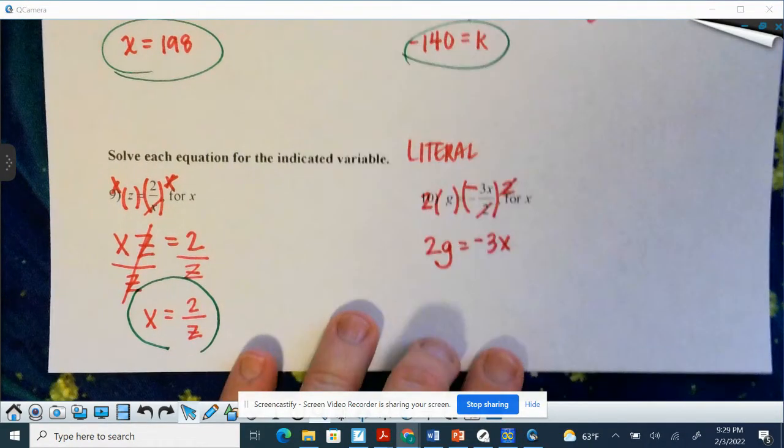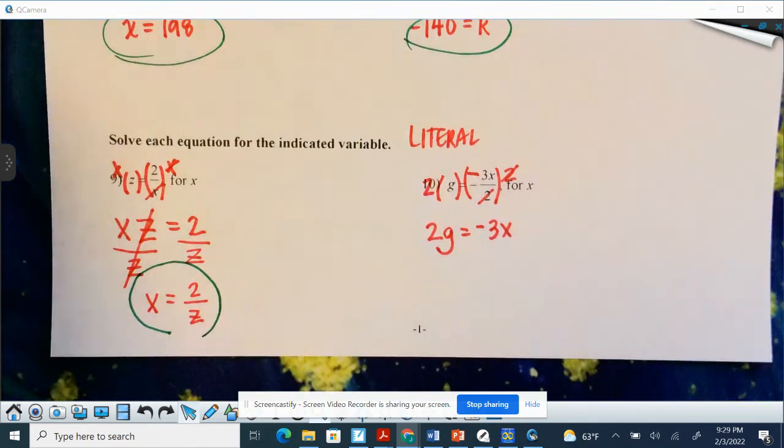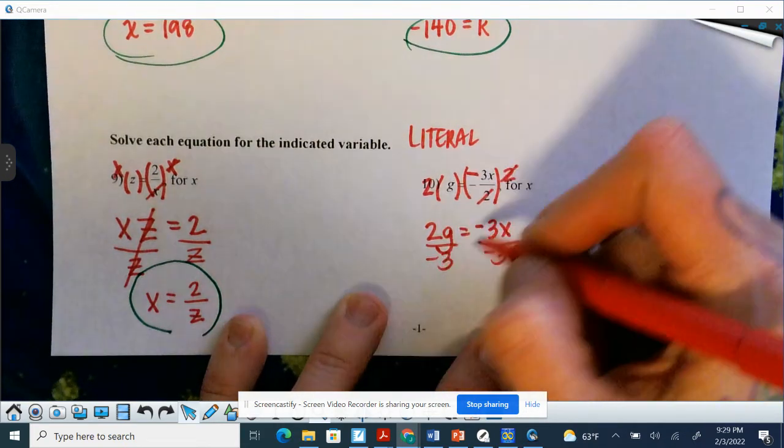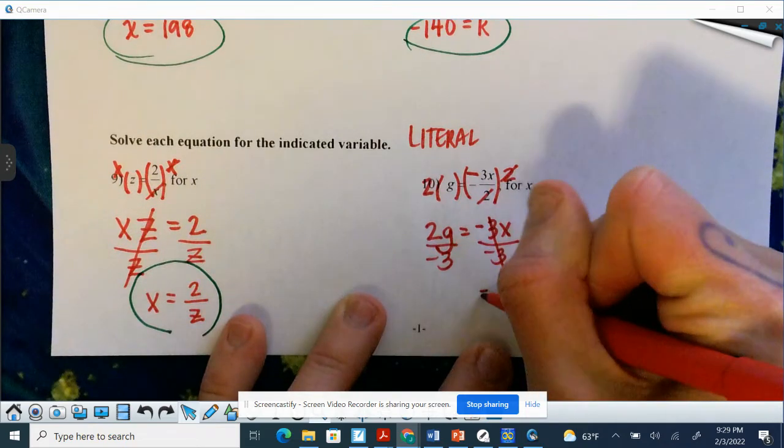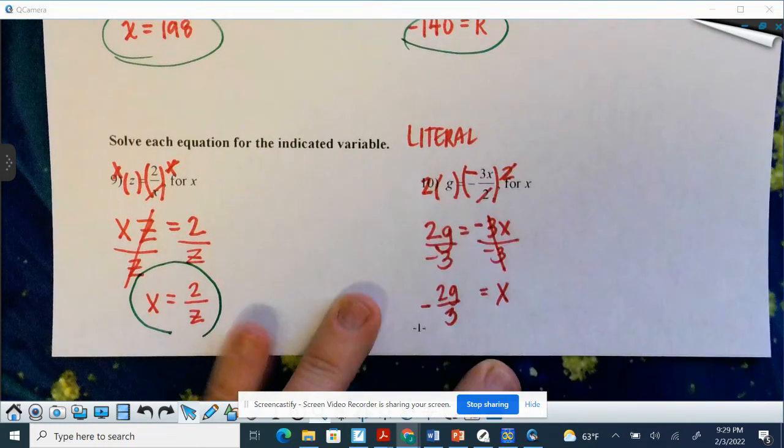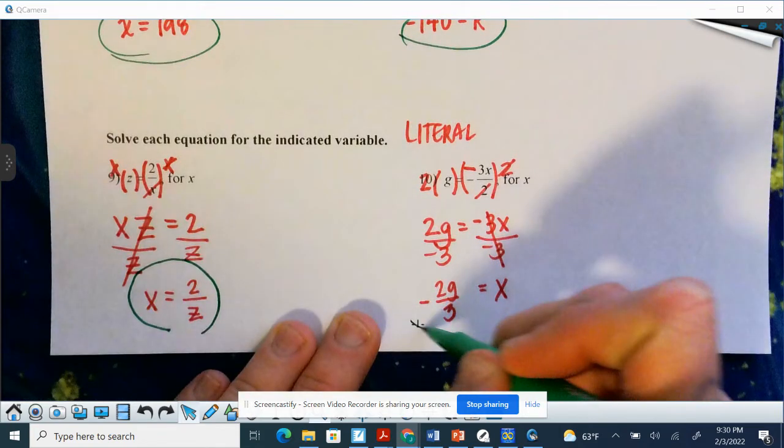Division is undone by multiplication. Inverse of division is multiplication. Now your question is, is x by itself? Nope. It is attached to that negative 3 by multiplication. It's negative 3 times x and the inverse of multiplication is division. So divide by negative 3. These 3s go away. So I have x equals 2g over negative 3. Depending on the formatting, they may put that negative with the bar, on the 2, or on the 3 still. But the entire answer needs to be negative, wherever you put the symbol. And x is indeed by itself. So we nailed it.